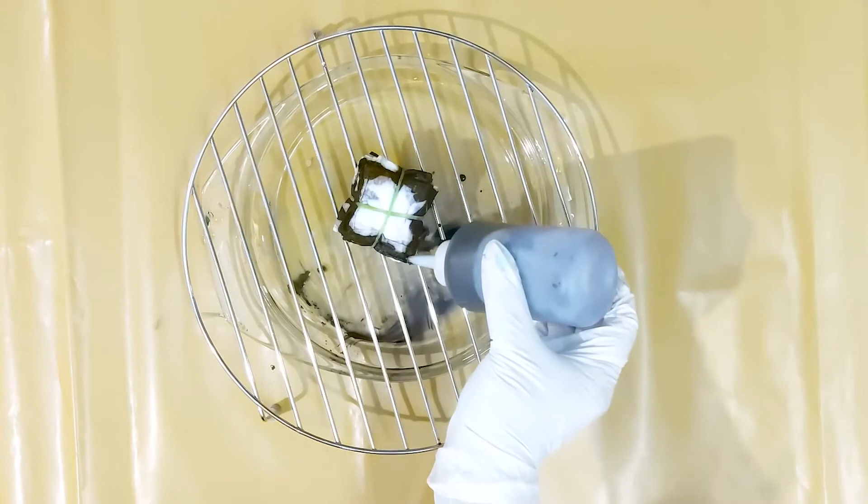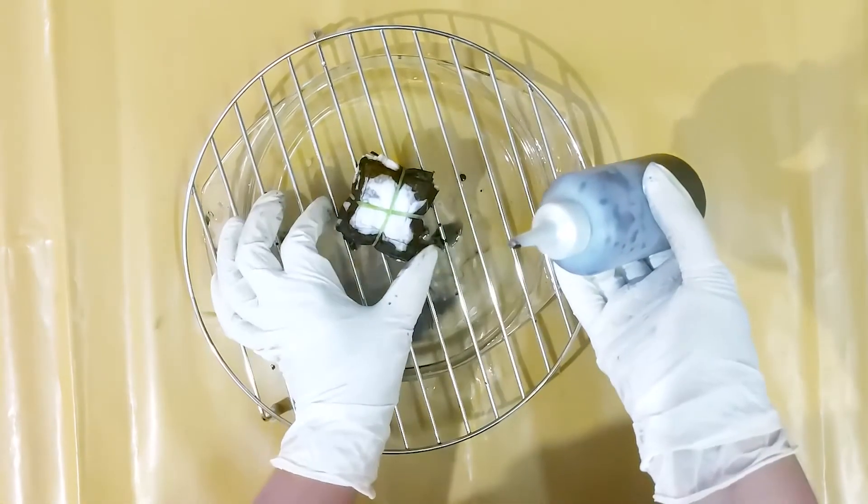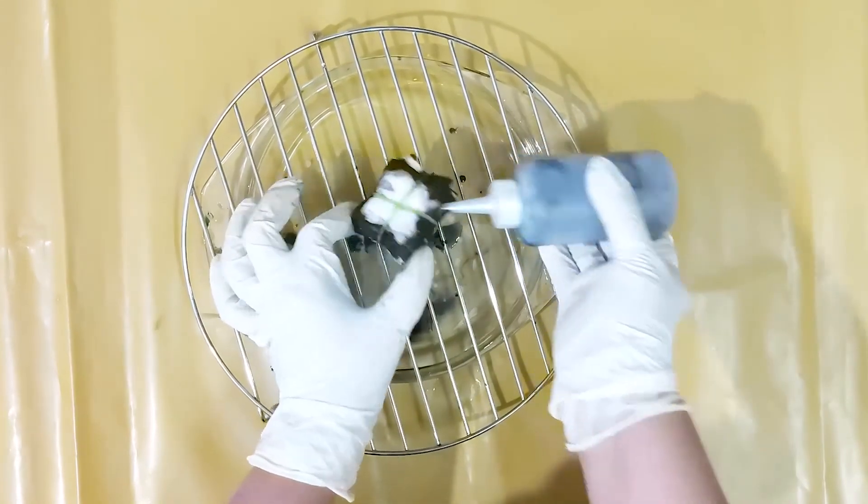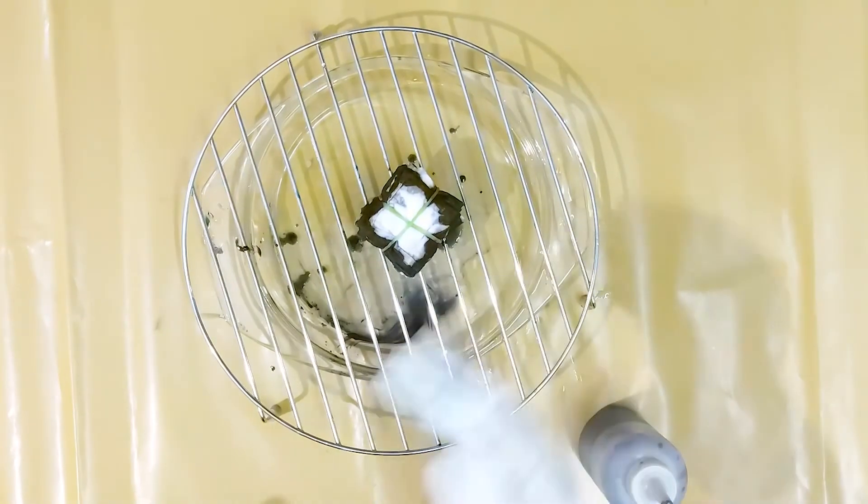Place your dye project into a plastic bag or just wrap it in a plastic to keep it damp while the dye completely processes. This will take 6-8 hours or even overnight if you want to give it some extra time.